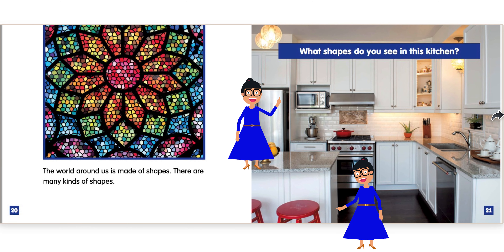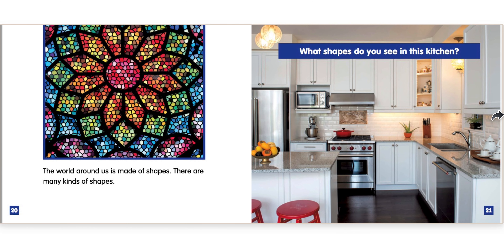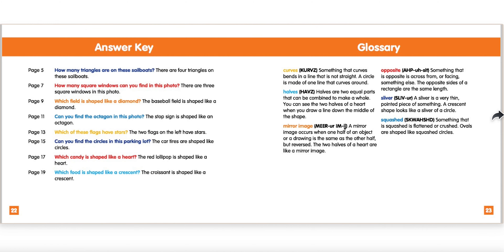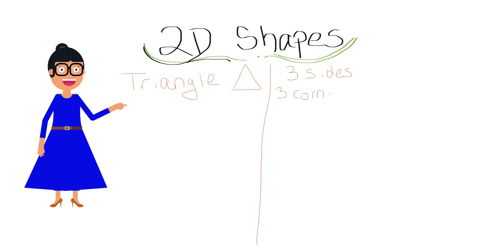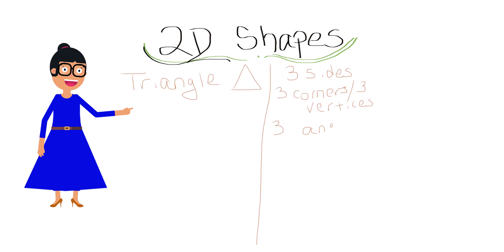It's time for us to review our 2D shapes. Triangle. It has 3 sides, 3 corners or vertices, and 3 angles.